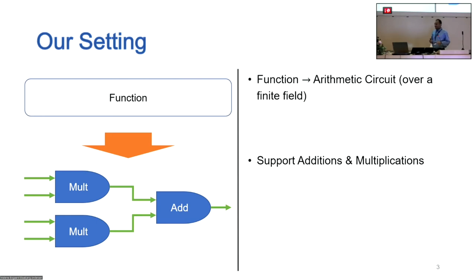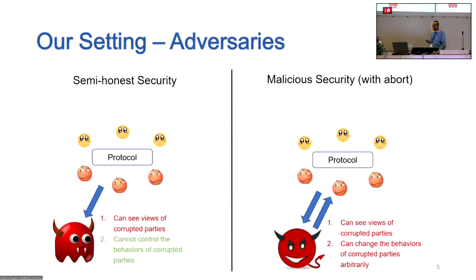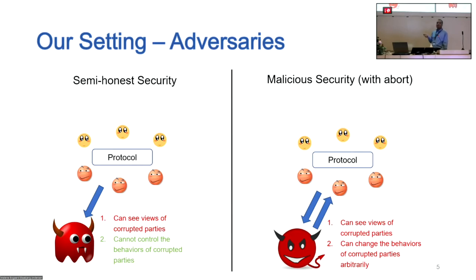We are just considering arithmetic circuits, and we assume there's a point-to-point channel between every pair of parties — there's no broadcast or anything like that. As usual, we will focus on semi-honest security versus malicious security. During the talk I will mostly focus on semi-honest security, but almost all of our results can be ported to the malicious setting as well. In semi-honest security, there's an adversary which can control a number of parties and it can see the view of the corrupted parties but it cannot control their behavior. In malicious security with abort, the adversary can see the views as well as direct the corrupted parties to do anything arbitrary.